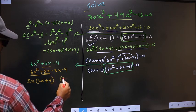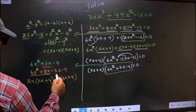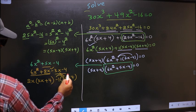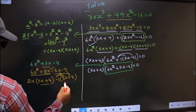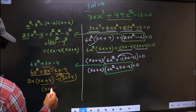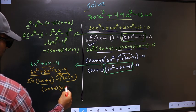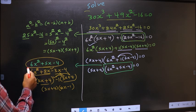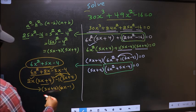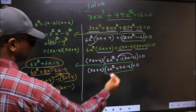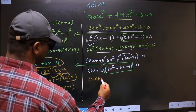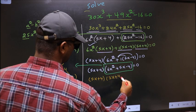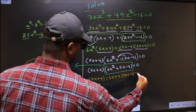Whatever we got here, we should get the same common factor from the remaining terms. Taking out -1 from (-3x - 4) gives -1(3x + 4). Now taking (3x + 4) common, we get (3x + 4)(2x - 1). Substituting back, the equation becomes (5x + 4)(3x + 4)(2x - 1) = 0.